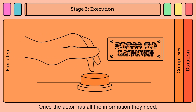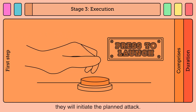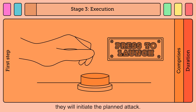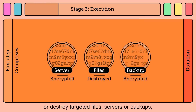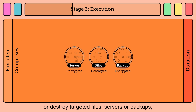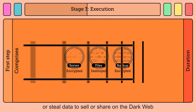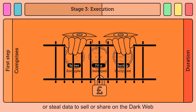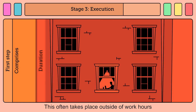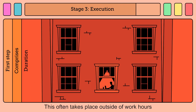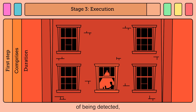Execution. Once the actor has all the information they need, they will initiate the planned attack. During this stage, the actor might encrypt or destroy targeted files, servers or backups, or steal data to sell or share on the dark web, or to hold for ransom. This often takes place outside of work hours to reduce the likelihood of being detected, and may last up to 48 hours or longer.